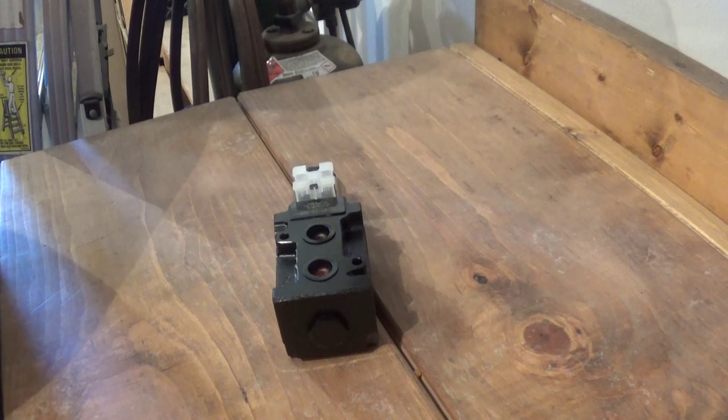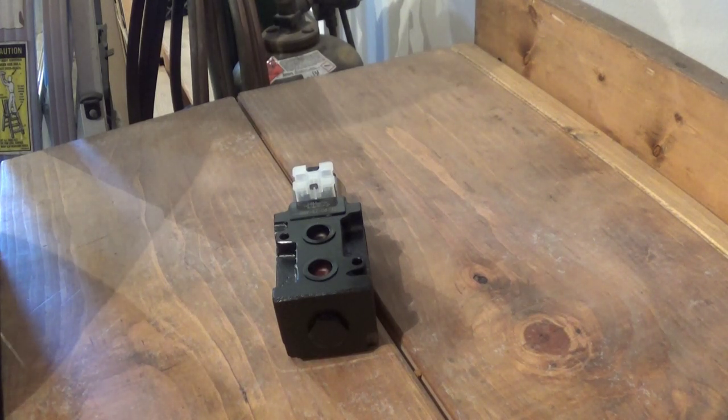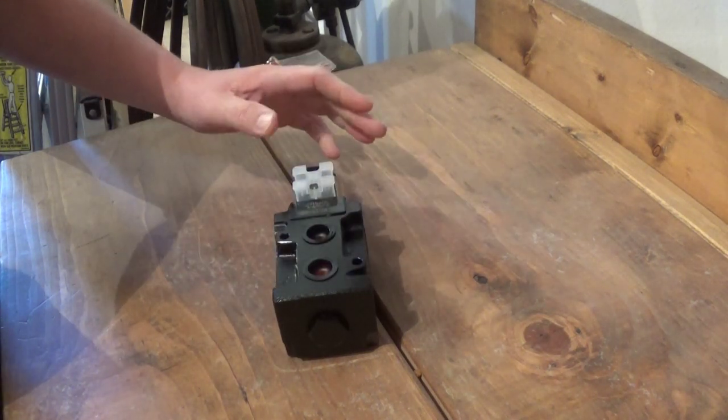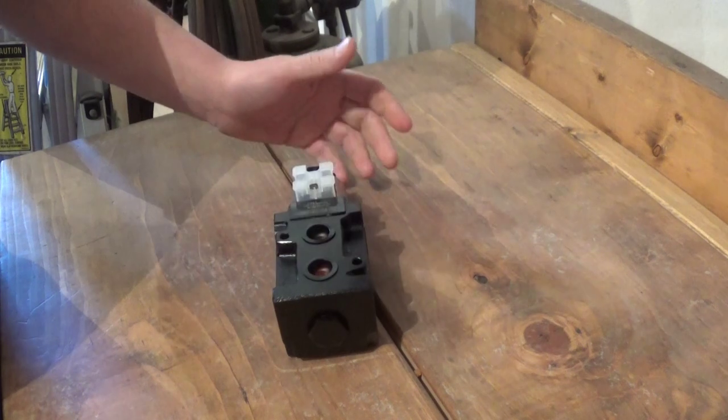Now if you have something like a tractor and you've already got one set of hydraulic remotes on the back, there are other devices you can purchase which will split that one set into two. If you don't have anything like that, this is what you need. This is a selector valve.